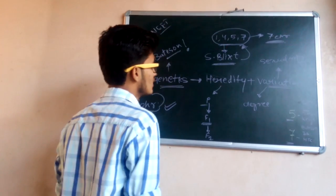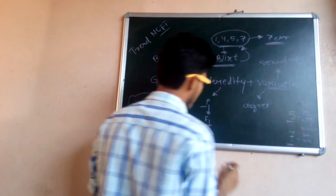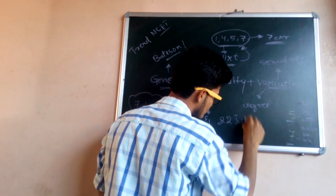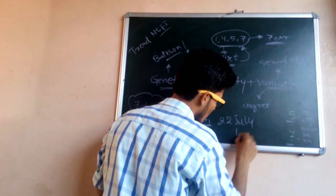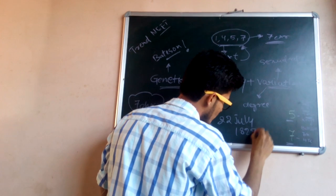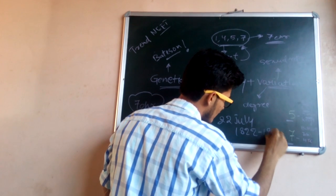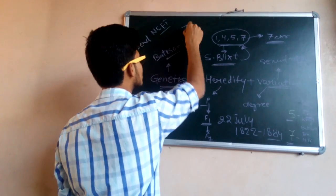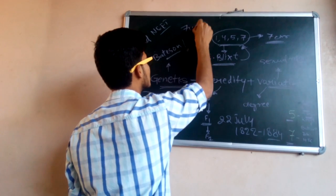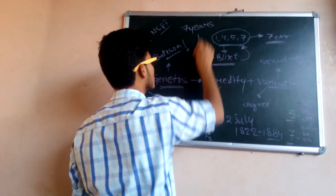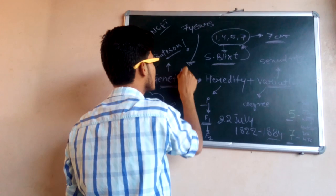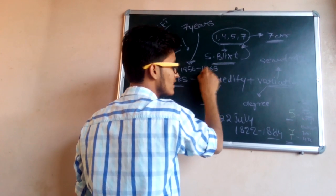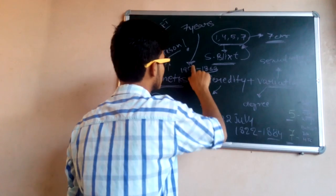Mendel was born on 22nd July 1822 and died in 1884. He conducted his experiments for seven years, from 1857 to 1864 — these years are very important to memorize.